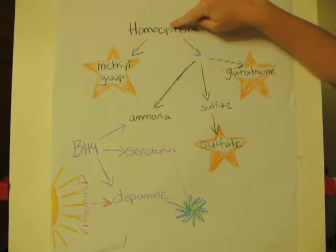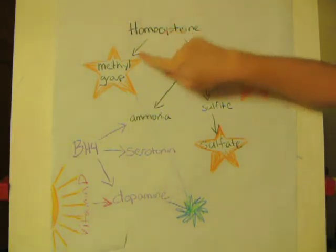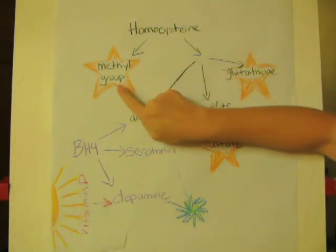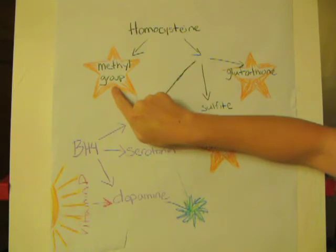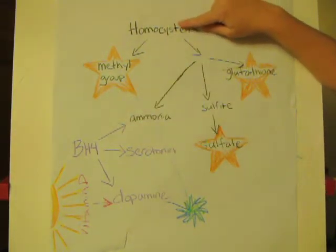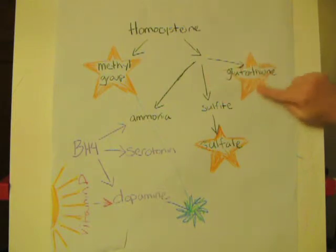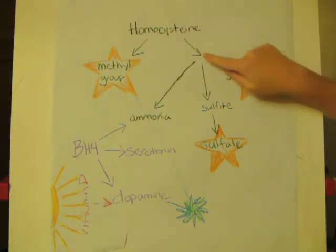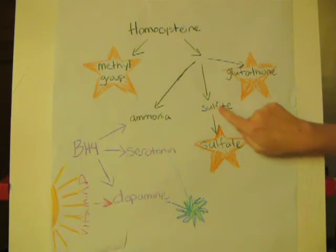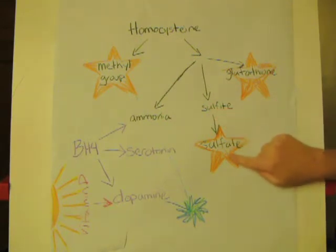It can go through the methyl cycle and generate a methyl group, which is one of our detox pathways. Or it can go down the transsulfuration sequence, and down here it helps to generate glutathione, another one of our detox pathways. And it makes sulfite, which can be converted into sulfate — yet another detox pathway.